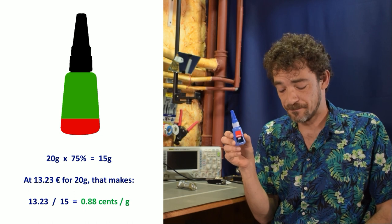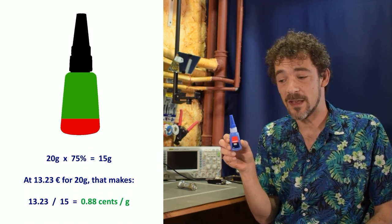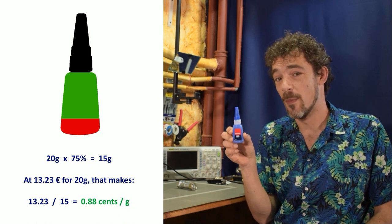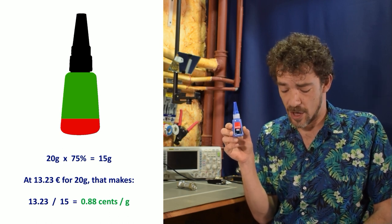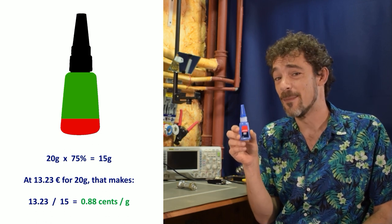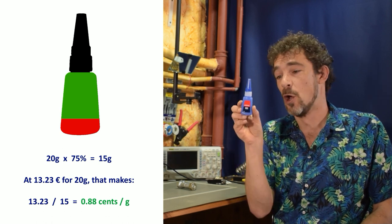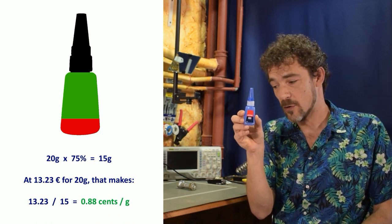Now if we do the math, 20 grams times 75% is 15 grams and if you calculate the per gram price you end up with at 13 euros and 23 cents for 20 grams that would make 13.23 divided by 15 grams which would equal approximately 88 cents per gram for this superglue.